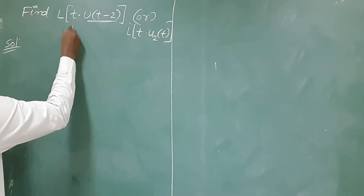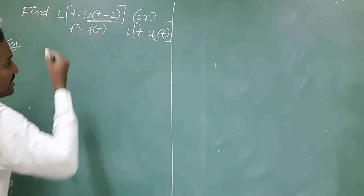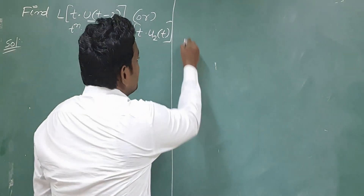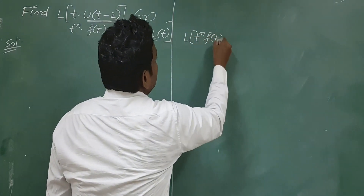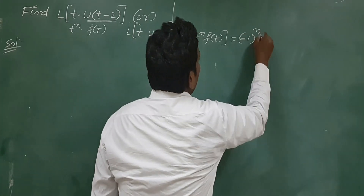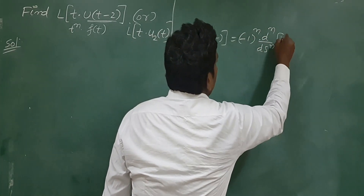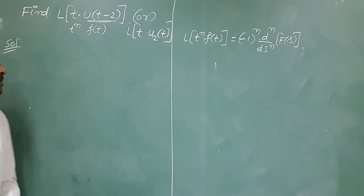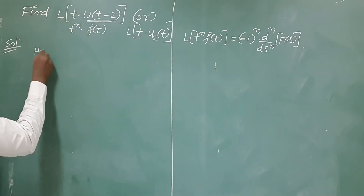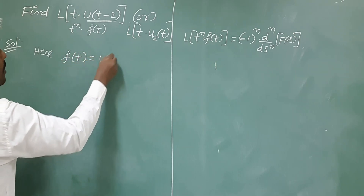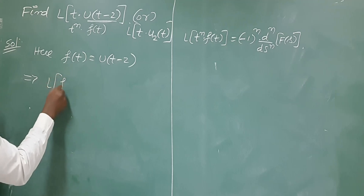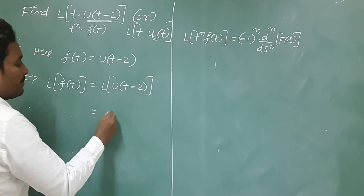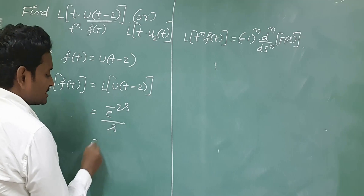The given problem is in the form of t^n · f(t), so we apply the multiplication rule on Laplace transform: L{t^n · f(t)} = (-1)^n · (d^n/ds^n) F(s). First choose f(t) = u(t - 2) and calculate its Laplace transform. Using L{u(t - a)} = e^(-as) / s with a = 2, we get F(s) = e^(-2s) / s.